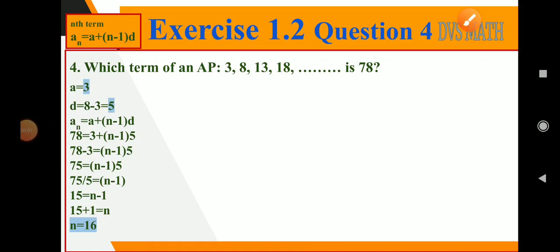Question number four: which term of an AP 3, 8, 13, 18... is 78? Which place, at which term will 78 occur? We have to find the n value.